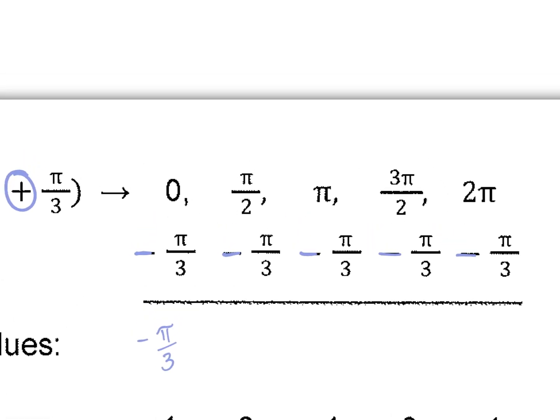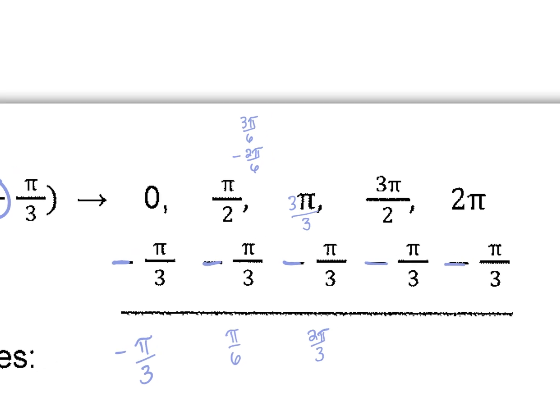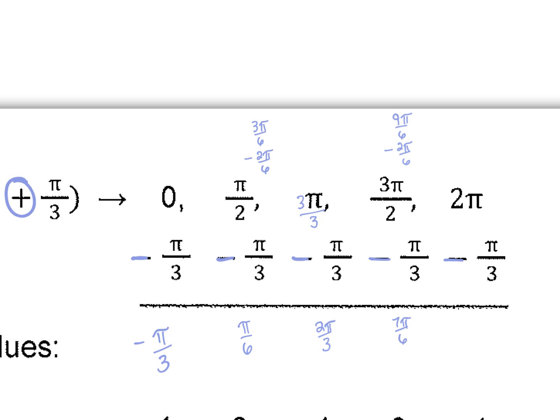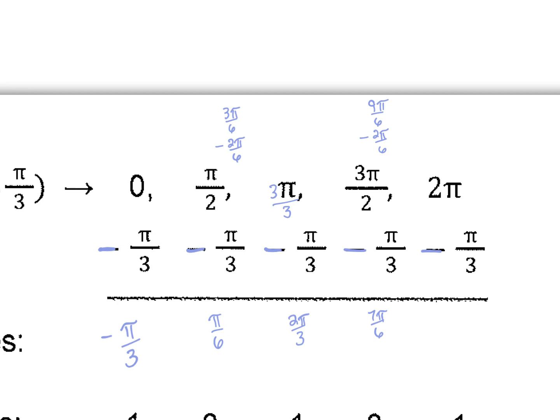Here we need common denominator. So we've got to do 3 pi over 6 minus 2 pi over 6. So this is 1 pi over 6. This is 3 pi over 3 minus 1 pi over 3, so we get 2 pi over 3. Here, common denominator again, we're going to do 9 pi over 6 minus 2 pi over 6, which is 7 pi over 6. Let's do 6 pi over 3 minus 1 pi over 3, so 5 pi over 3.